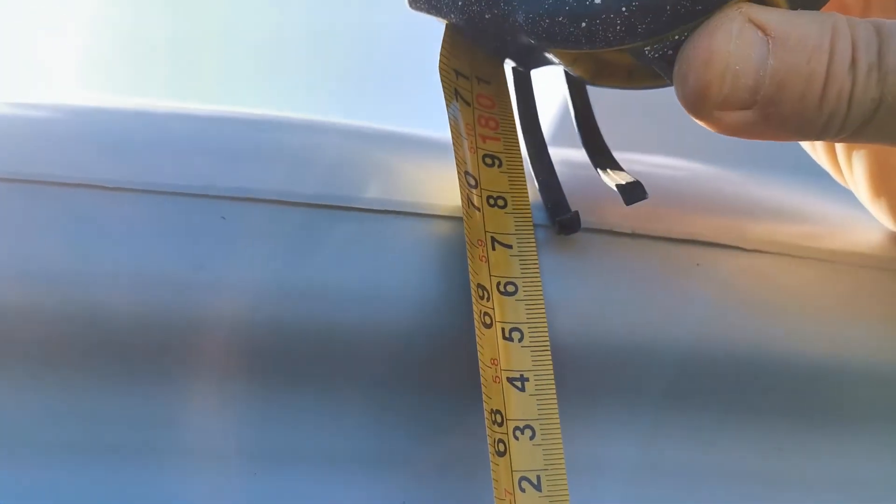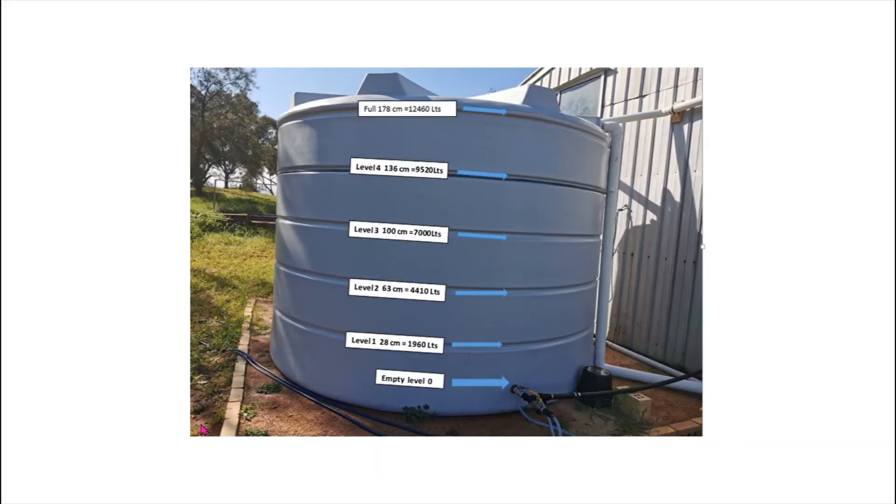And then the top of the tank is 178 centimeters. Now that we know that one centimeter equals about 70 liters, we can make some marks on the tank. In this case, the tank's got ribs, so we'll just use those as our levels.